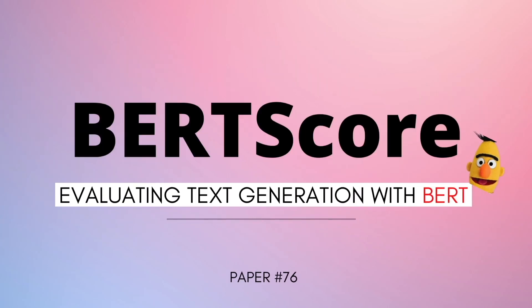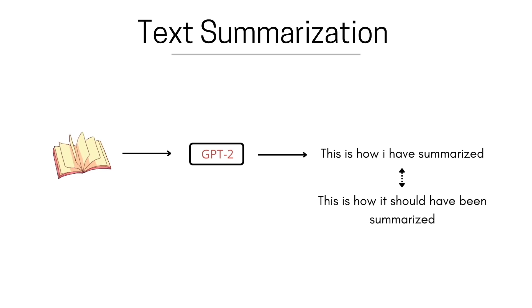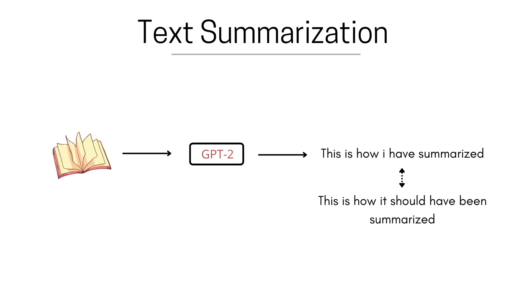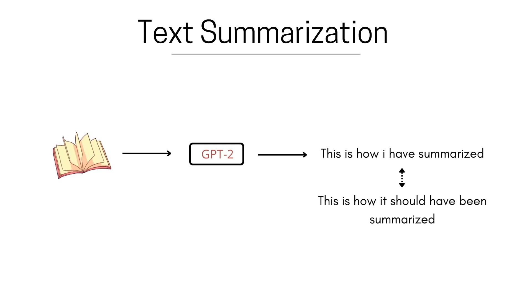In this video we'll look into BERTScore metric, which is about evaluating text generation systems with BERT. Let's take an example of a text summarization system where the task is to summarize a book by passing it through the GPT-2 model. The model produces a summary, but the ground truth was a different summary — and the question is: how do you know the quality of the summary you have generated?